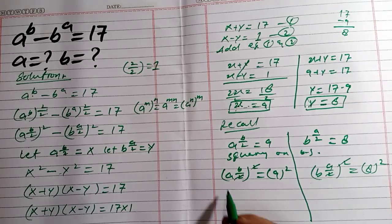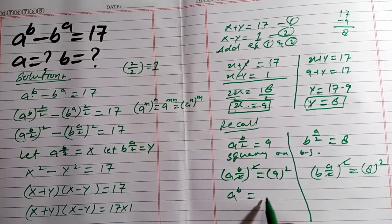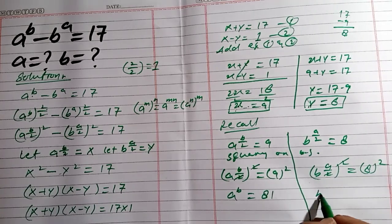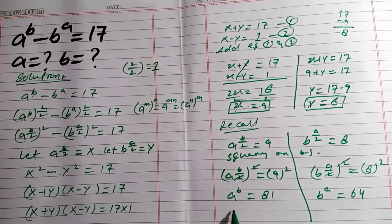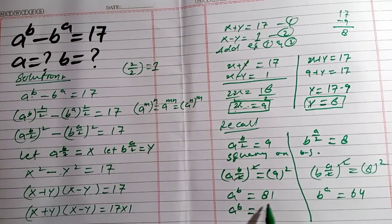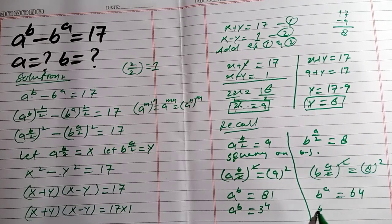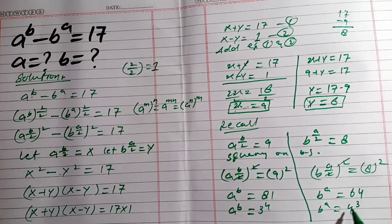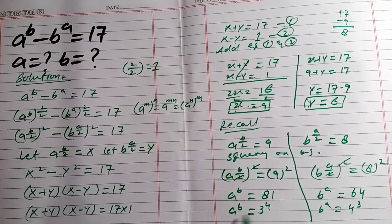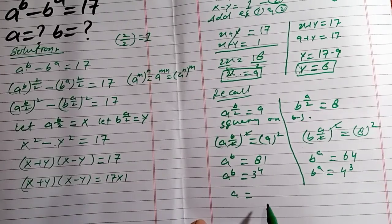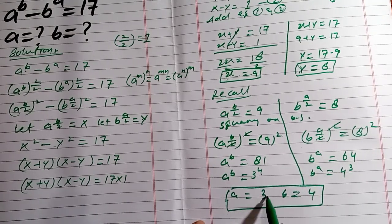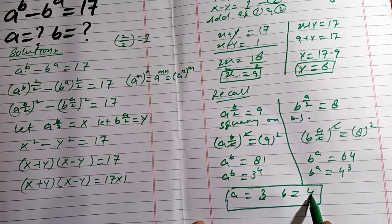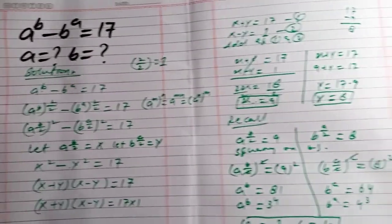So we have a^b = 81 and b^a = 64. We can write 81 as 3^4, so a^b = 3^4. We can write 64 as 4^3, so b^a = 4^3. Comparing both terms, we get a = 3 and b = 4 as our final answer.